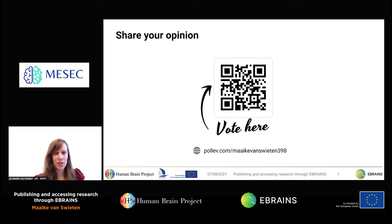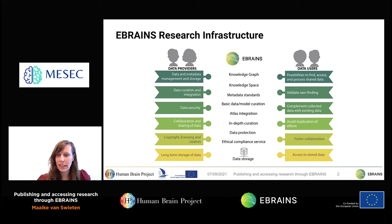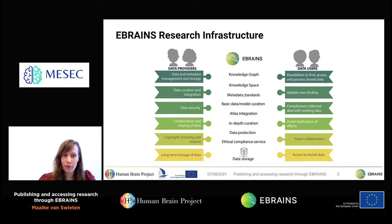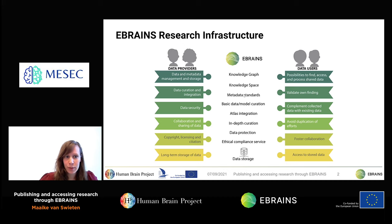The eBrains Research Infrastructure is a platform that addresses the needs of both neuroscience data providers and data users. Data providers need a repository for long-term storage and a persistent identifier such as a DOI to make data findable and citable. Data users need the possibility to find, access, and process shared data to validate and complement existing data and avoid duplication of research. eBrains covers a wide variety of neuroscience data ranging from cellular levels to large-scale networks, brain areas, species, and linked to a number of research techniques.